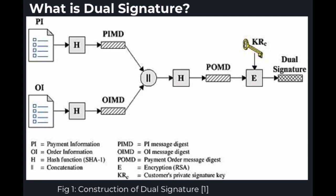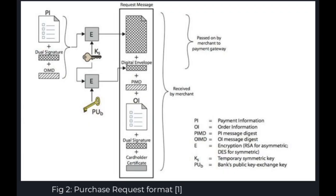The link is needed so that the customer can prove that this payment is intended for this order and not for some other goods or service. This is done by using dual signature. Payment information is hashed and so is order information, which is encrypted by a key to obtain the dual signature. The purchase request consists of a request message formed by payment information, order information message digest, and dual signature. These three pieces of information are encrypted using a key, which is also encrypted using the bank's public key, forming a digital envelope.